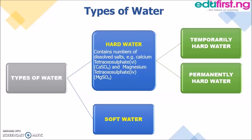You may notice the effect of hard water in your kitchen when washing clothes or plates. After using soap to wash, you may feel like there is a film or residue left on your hands. This means there is hardness in the water. Soap doesn't lather well in hard water — it won't form a good lather, making it hard to wash and causing you to use more soap.